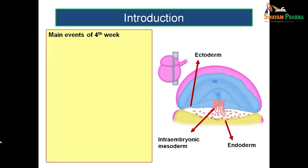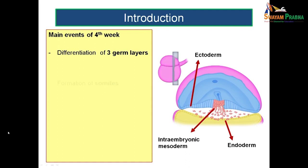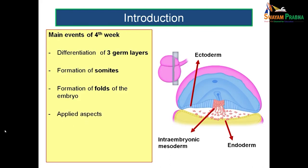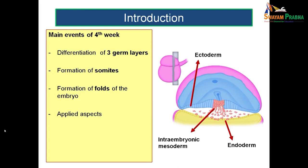In this session, we will be dealing with the main events occurring in the fourth week under the following headings: the differentiation of the three germ layers — the ectoderm, endoderm, and mesoderm; the formation of somites; and the formation of folds of the embryo. There are two types of foldings — cephalocaudal folding and lateral folding — and we will also see the applied aspects.